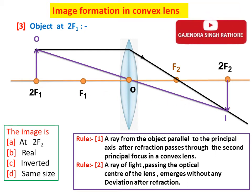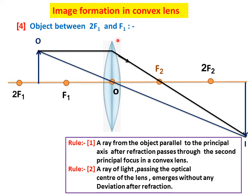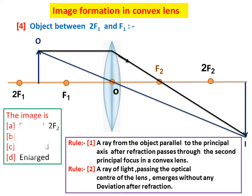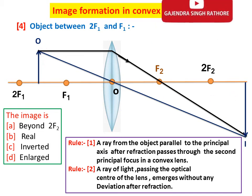The fourth situation is when the object is between 2F1 and F1. A ray from the object parallel to the principal axis after refraction passes through the second principal focus, and a ray passing through the optical center emerges without any deviation after refraction. We get image I beyond 2F2 — it is real, inverted, and enlarged.